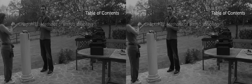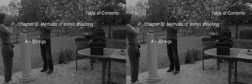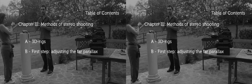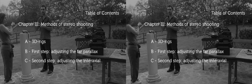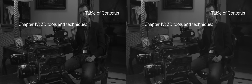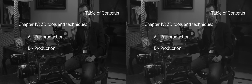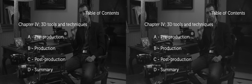We're going to step into the process of actual stereo shooting in the third chapter, called Methods of Stereo Shooting. After introducing 3D rigs, we'll explain the two necessary steps to shoot in 3D: the first step, adjusting the far parallax, and the second step, adjusting the interaxial — which is the distance between the two cameras. In the fourth and final chapter, we'll review 3D tools and techniques, covering how stereo 3D changes pre-production, production, post-production challenges, and then conclude with a summary of the entire course.